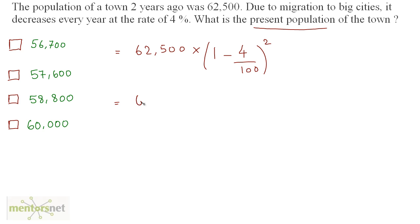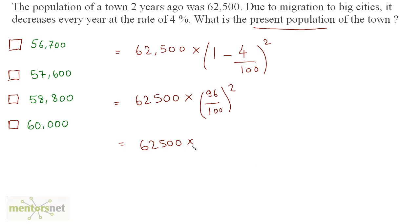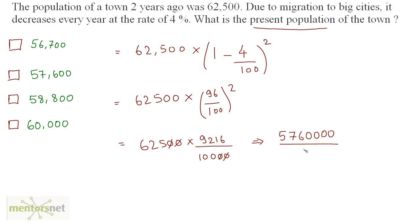This is equal to 62,500 times (100 minus 4) is 96 upon 100, squared. So this equals 62,500 times 96 squared, which is 9,216, upon 100 squared, which is 10,000. The zeros get cancelled out, giving 625 times 9,216 equals 5,76,000 upon 100.